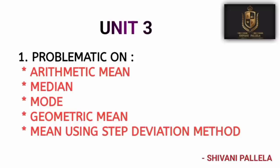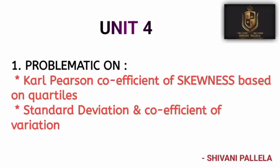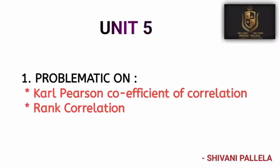Mean has a direct method and an indirect method. Mean, Median, and Mode, along with Skewness and Quartiles, are the major problematic topics worth 12 marks in Unit 4. Standard Deviation and Coefficient of Variation are also important — you can choose Coefficient of Skewness as your choice question; it is easy to do. From Unit 5, students should focus on Rank Correlation and Karl Pearson's Coefficient of Correlation. These are compulsory problematic questions in Part B for Unit 5.